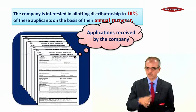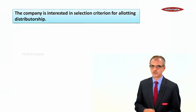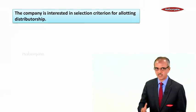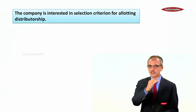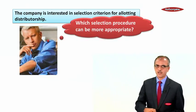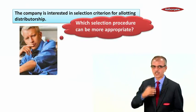Applications are received by the company. The company is interested in a selection criterion for allotting distributorship. Which selection procedure can be more appropriate?